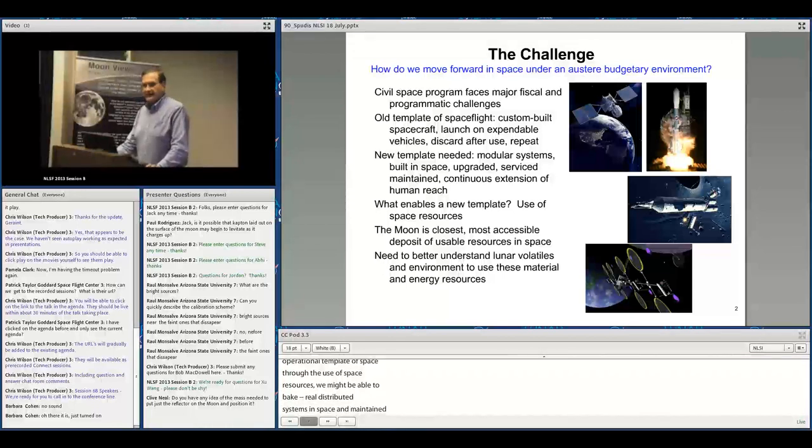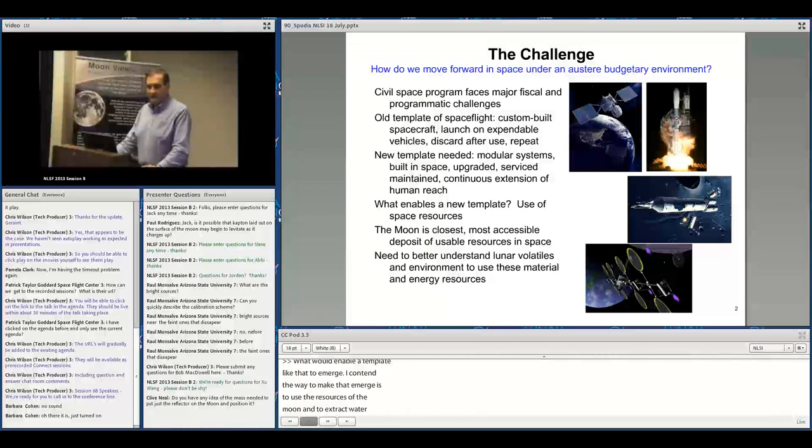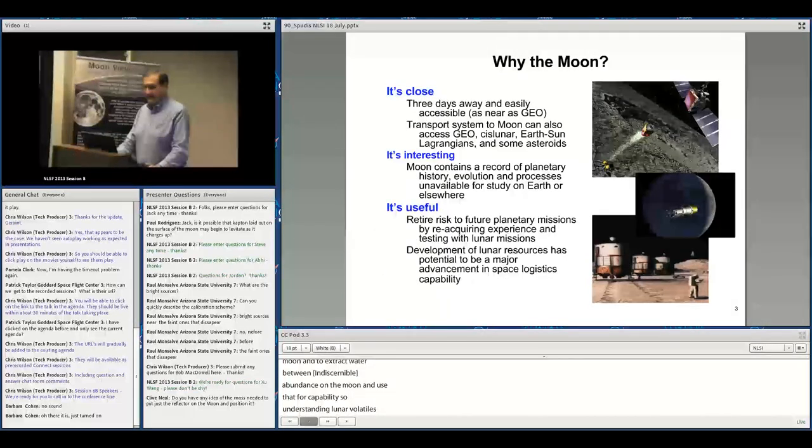The way to enable this is to use Moon resources, extracting water which is now known to be present in abundance. Understanding lunar volatiles—their quantities, physical states, and accessibility—is all relevant to fundamentally changing the template of spaceflight.